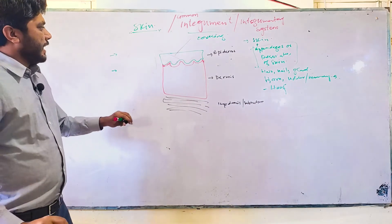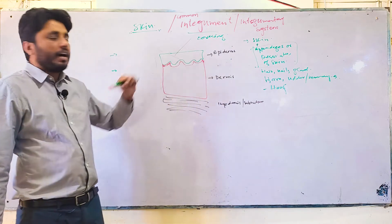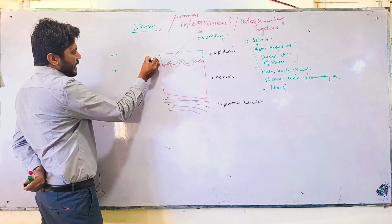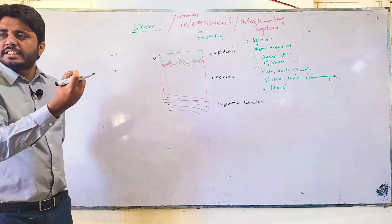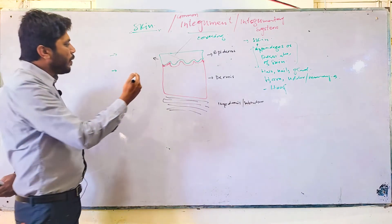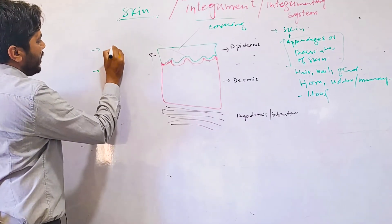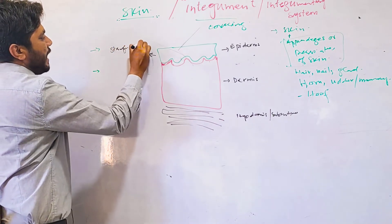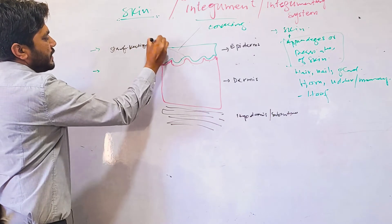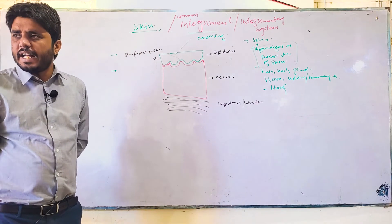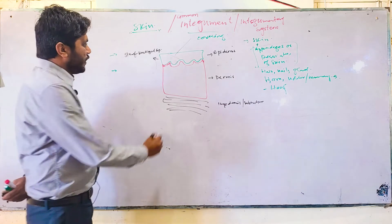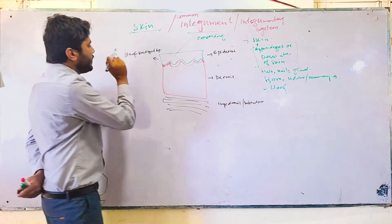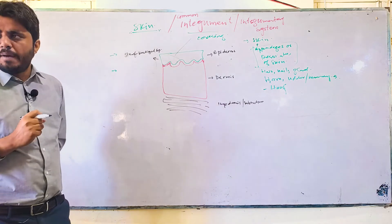The epidermis is an epithelial layer. More specifically, it is stratified keratinized epithelium. Stratified means it has many layers, and keratinized means the outermost layer is a dead-cell layer filled with keratin.